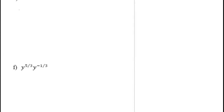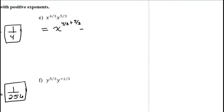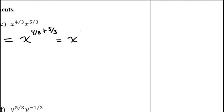For x to the 4/3 times x to the 5/3: when multiplying with the same base, add exponents — so this is x to the 4/3 plus 5/3, which gives x to the 9/3. Simplifying 9/3 gives 3, so the result is x cubed.